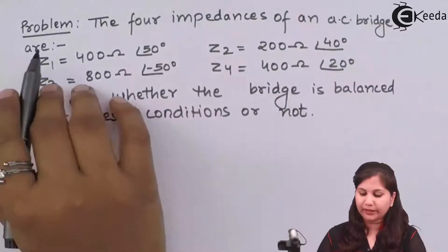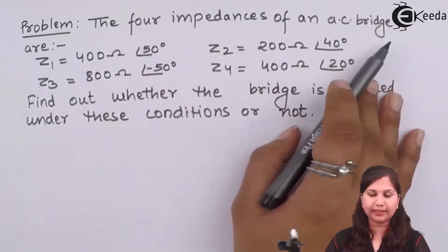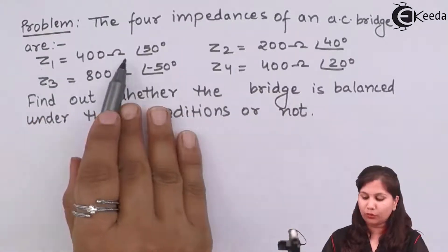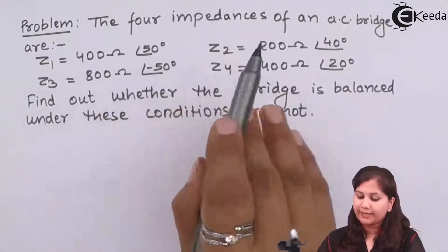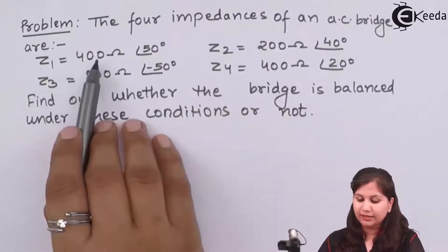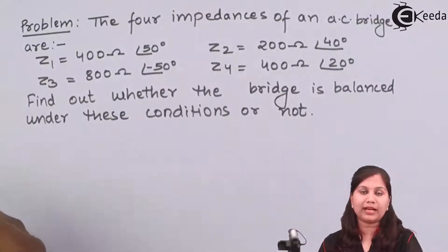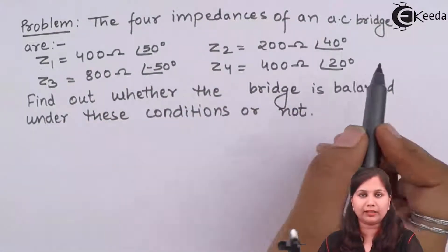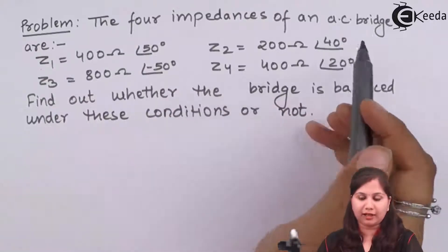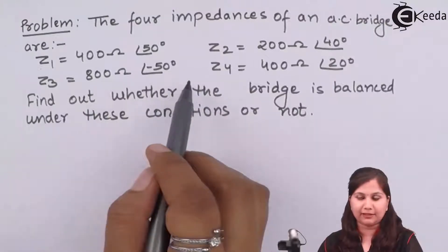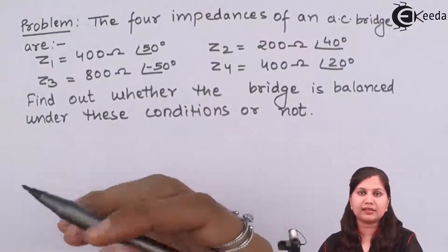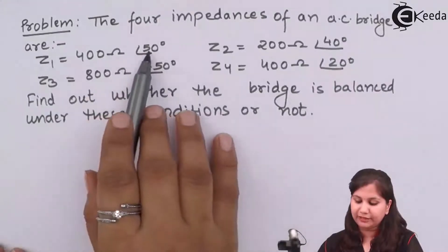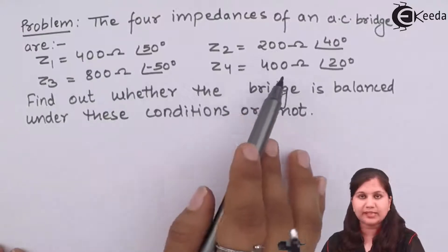Our problem is number 2. We are given the 4 impedances of an AC bridge: Z1, Z2, Z3, and Z4. Z1 is an impedance of 400 ohms having a phase angle of 50 degrees. Z2 has a value of 400 ohms, Z3 is 200 ohms, and Z4 is 800 ohms, with their respective phase angles given. If the phase angle is positive it means it's an inductor, if negative it's a capacitor, and if zero it's a resistance.